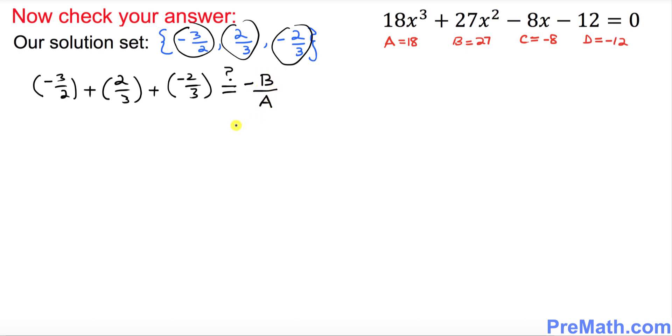And ask yourself, is it equal to -b/a? You can see a, b, c—these are all the coefficients. So -b/a is going to be, b is 27, so -27/18. If you reduce it, that's going to give you -3/2.